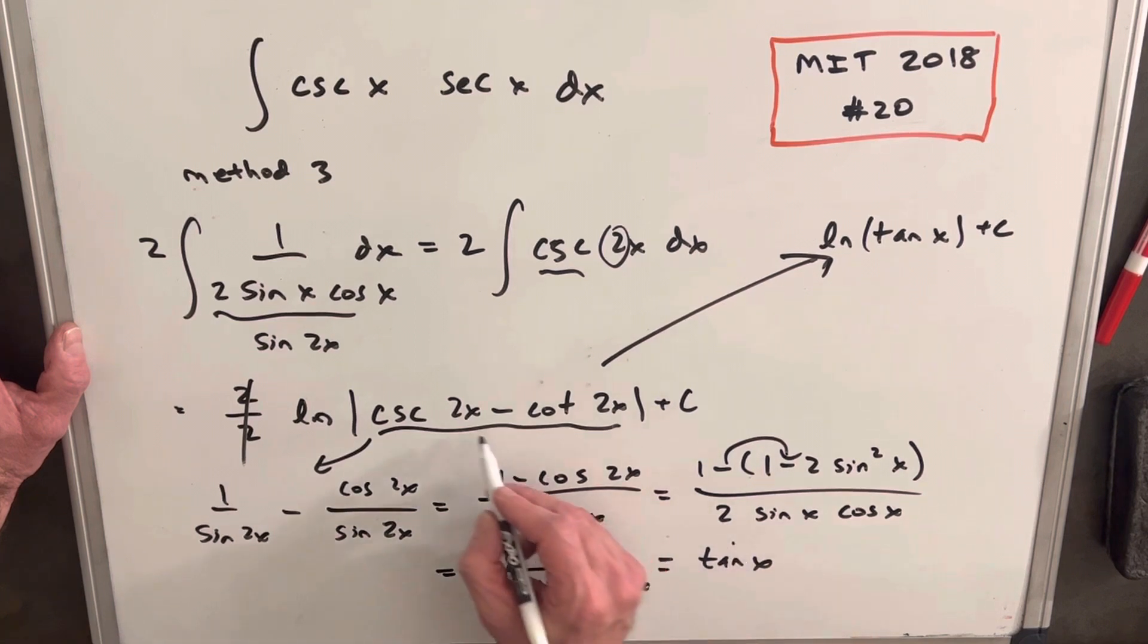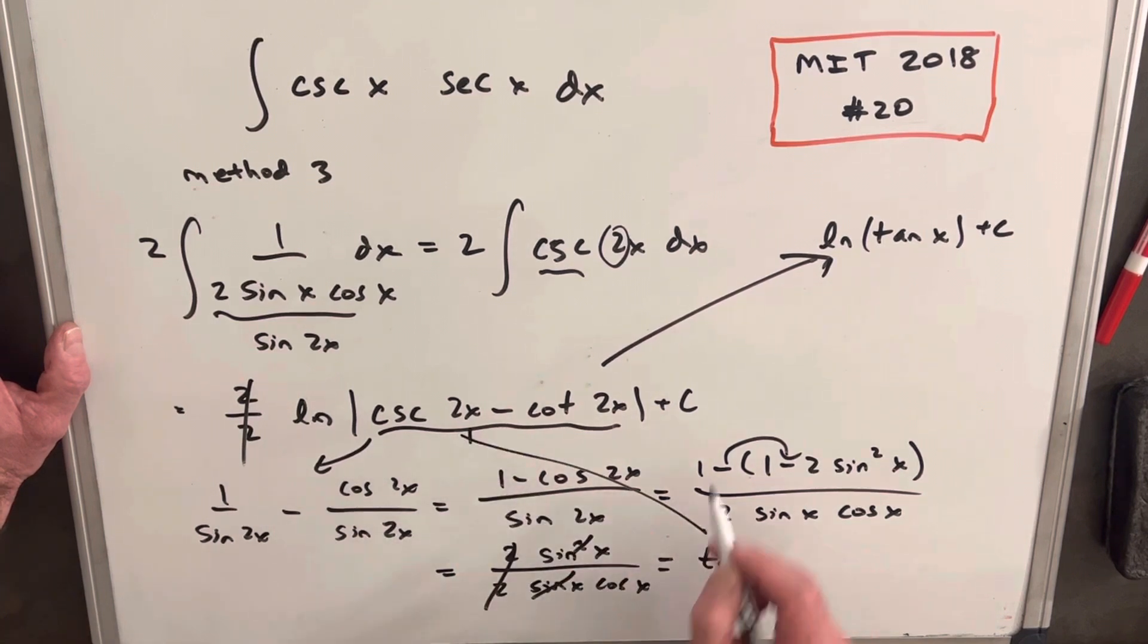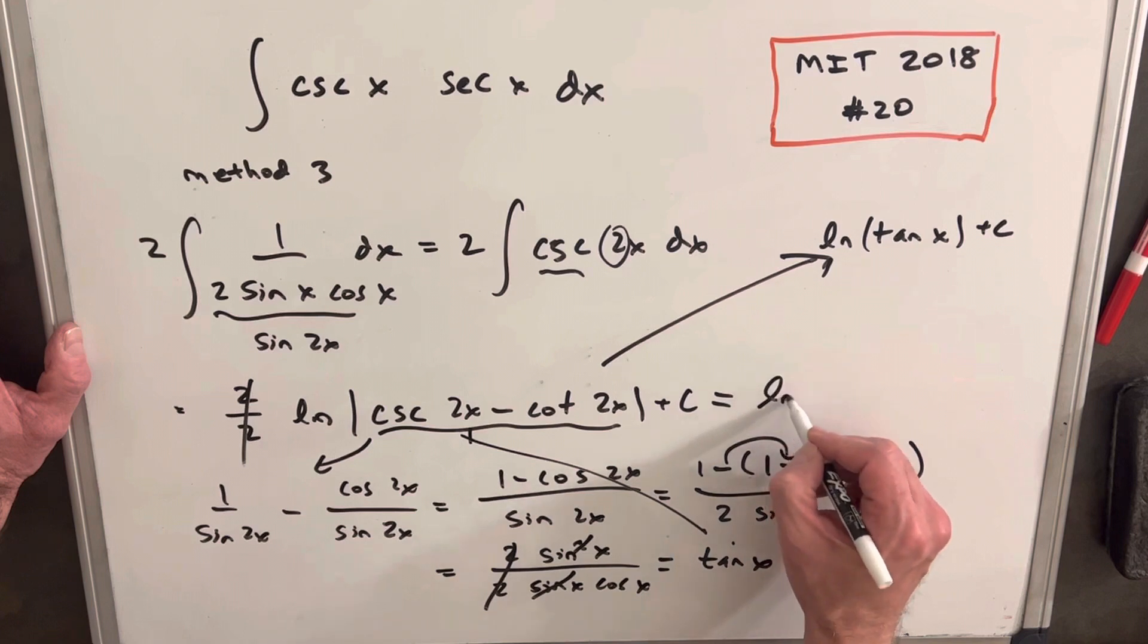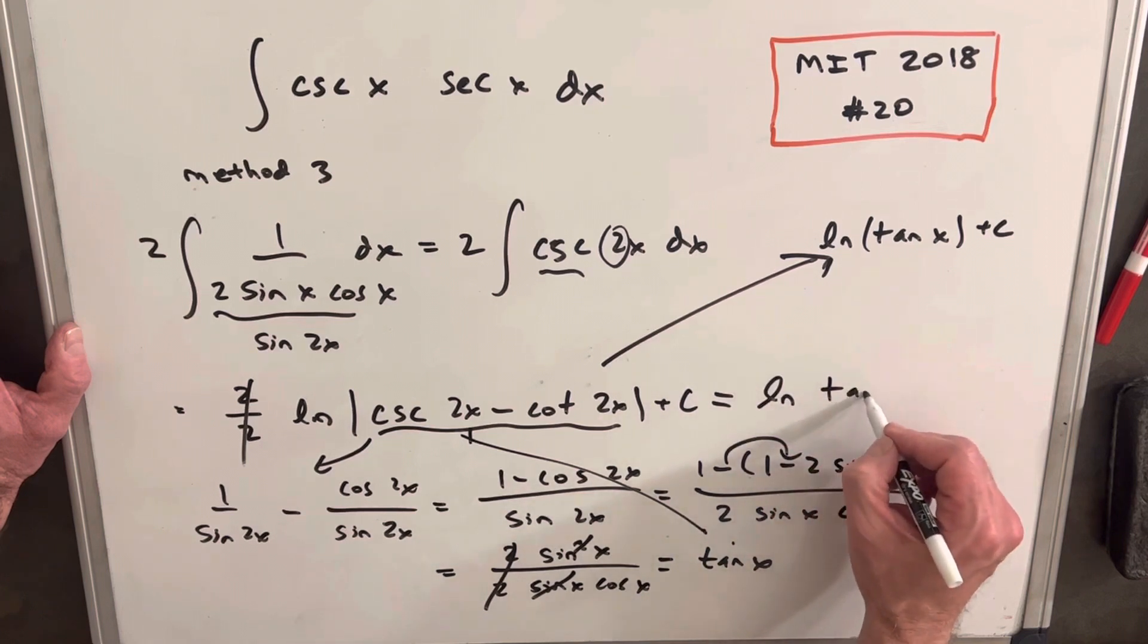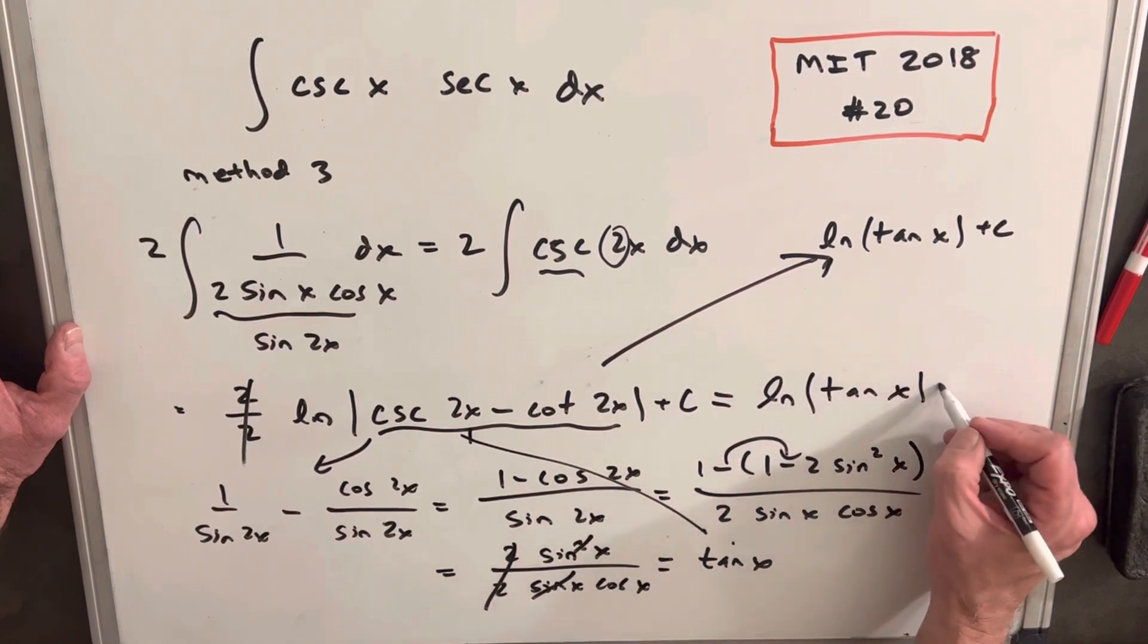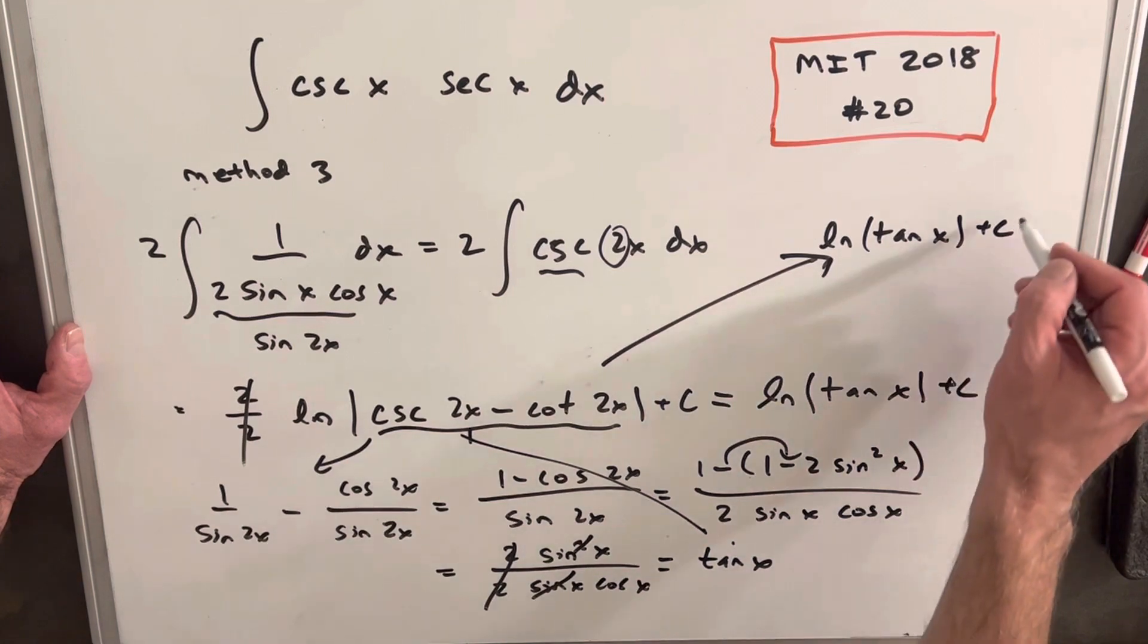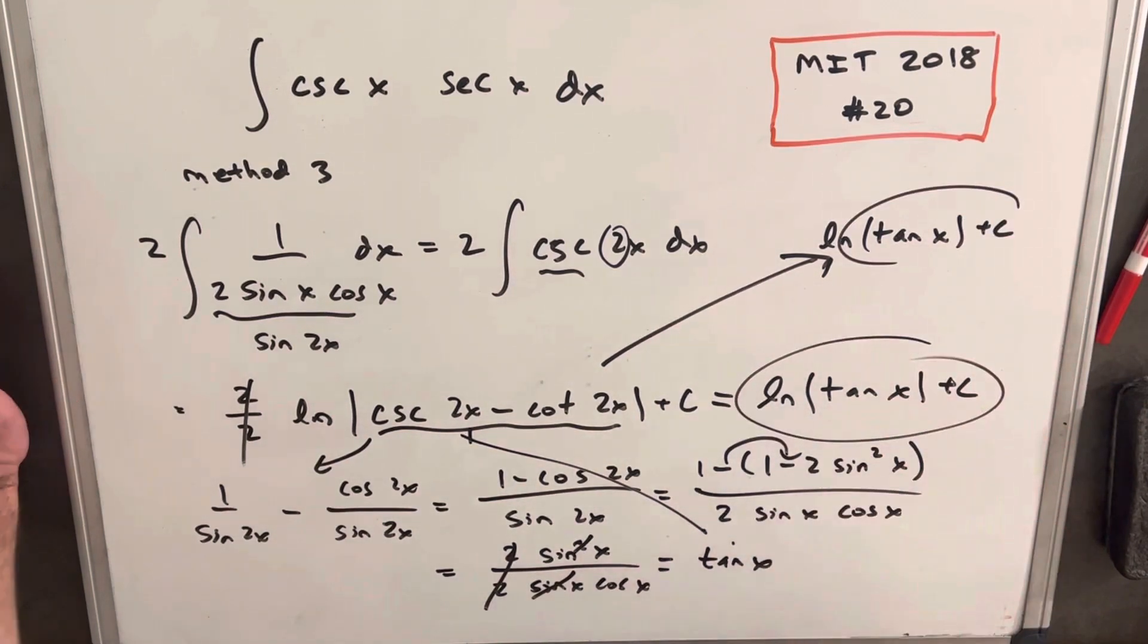But that's what we wanted, right? Because we took this piece and we showed it's tan x. So therefore, we can write this as ln tan x plus c. Same as this. And that's our solution.